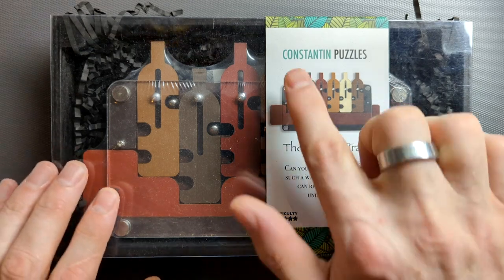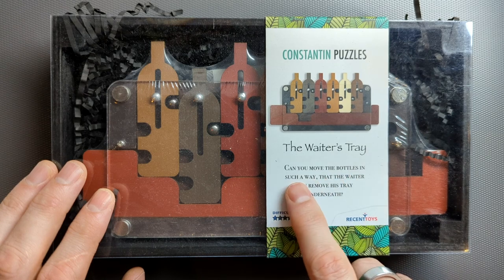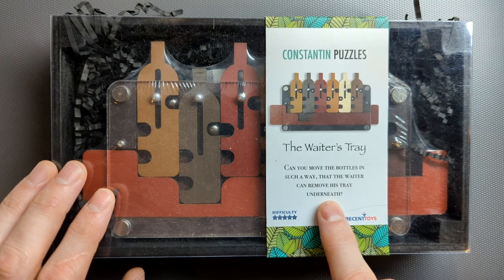Hi! In this video I'm going to have a look at this Konstantin Puzzles Waiter's Tray. The goal is to move the bottles in such a way that the waiter can remove his tray from underneath.